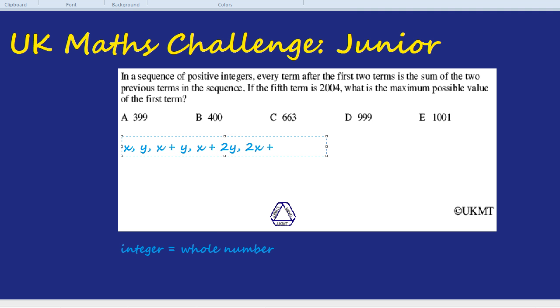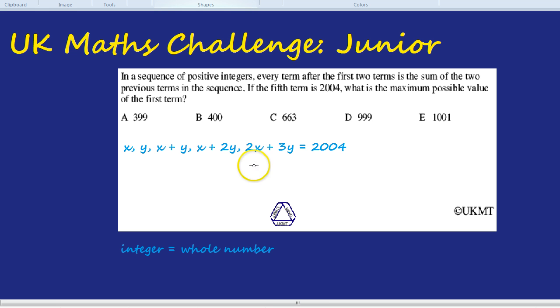Here's where it comes in handy. Those letters could represent any positive integer, but we know what they equal. That fifth term, we know it equals 2004. So we have this strange equation: 2X plus 3Y equals 2004. How could we use that?